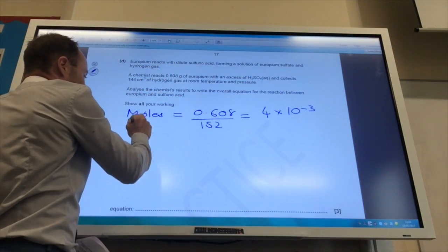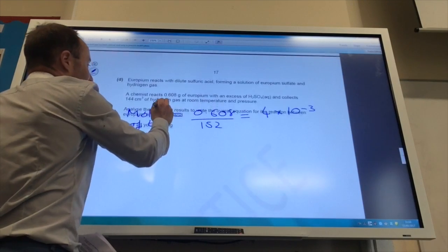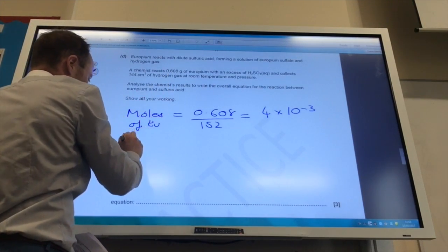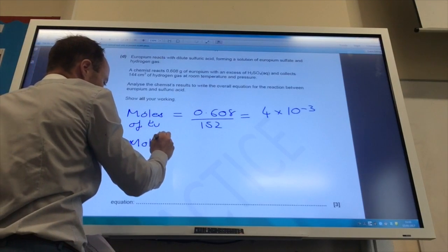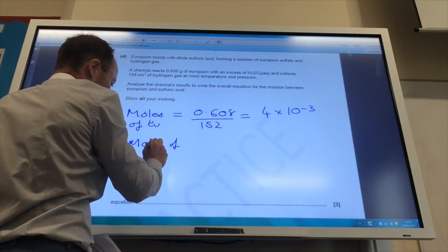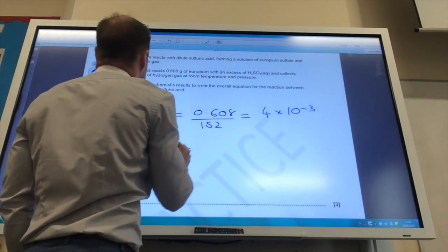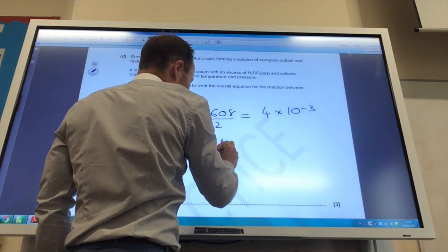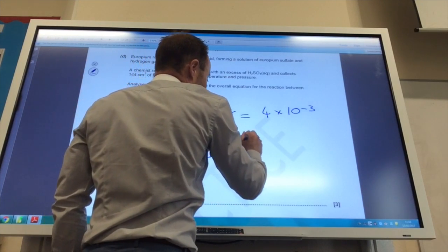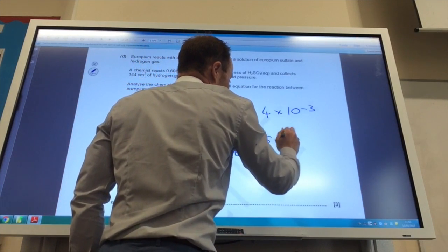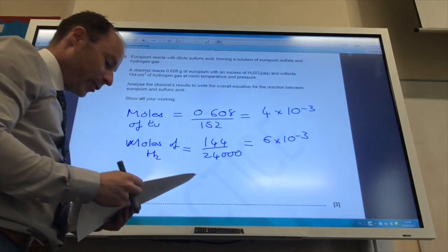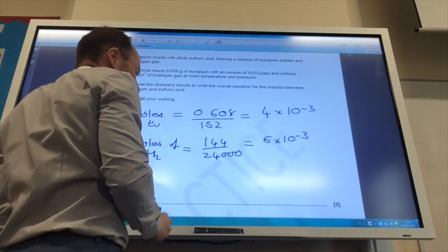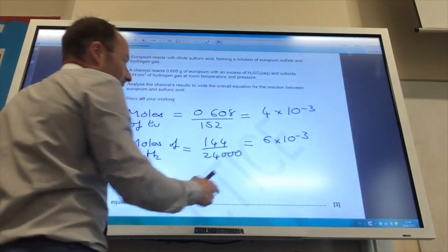You've also been given a volume of hydrogen. So you can work out your moles of hydrogen, which is going to equal your volume divided by 24,000. And if you do that, it comes to 6 times 10 to the minus 3. So the ratio of europium to hydrogen is 2 to 3.